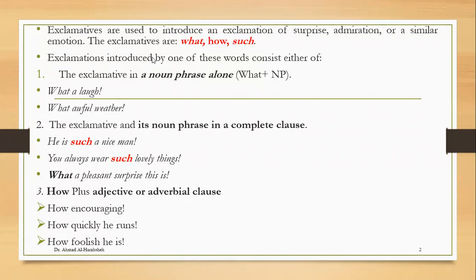The exclamatives are: what, how, which, and such. These are the exclamative tools, the exclamative words in English. So when we'd like to make an exclamative sentence or exclamation, we should start with one of these words plus a noun phrase.